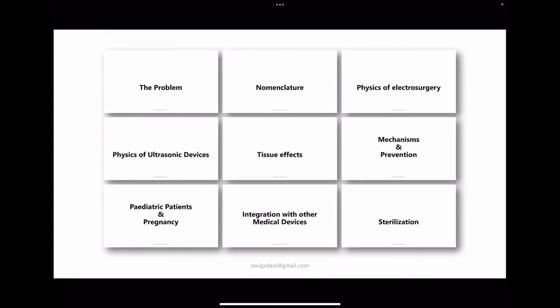To summarize the physics: wall outlet at 50 Hz → electrosurgical unit converts to 500,000 Hz → cations and anions in cells oscillate between poles at that frequency → kinetic energy → friction generates heat → thermal energy. The same mechanism applies to ultrasonic devices, which also create heat. Now let us look at the tissue effects of that heat.